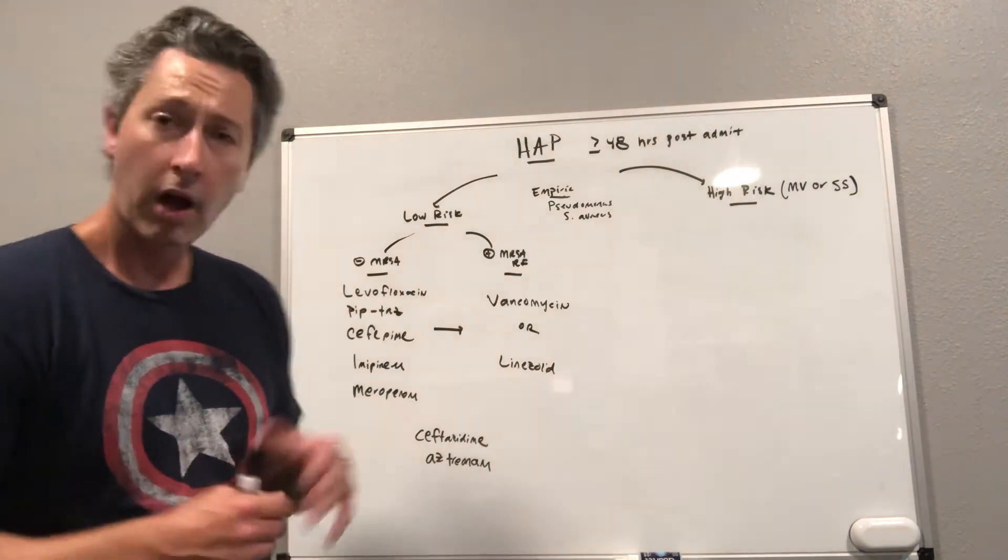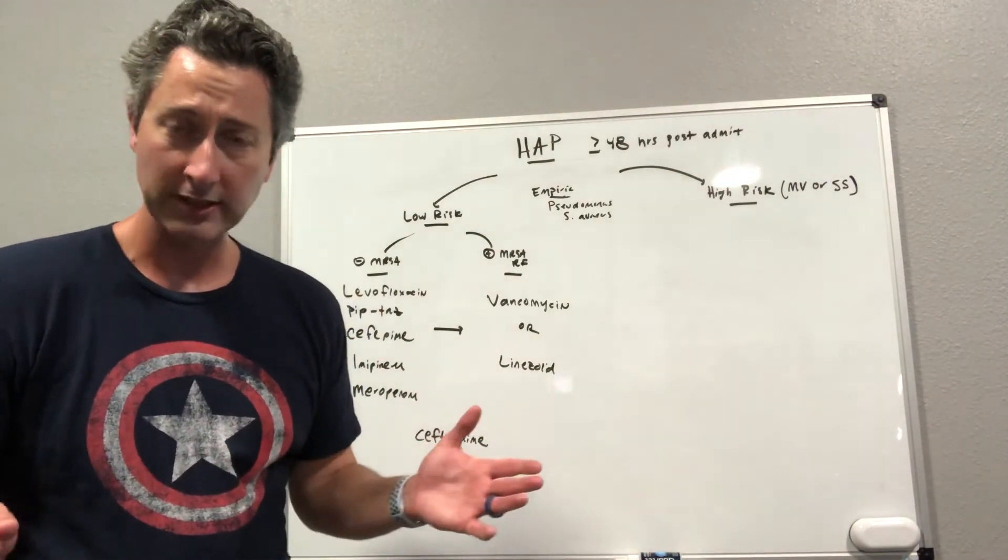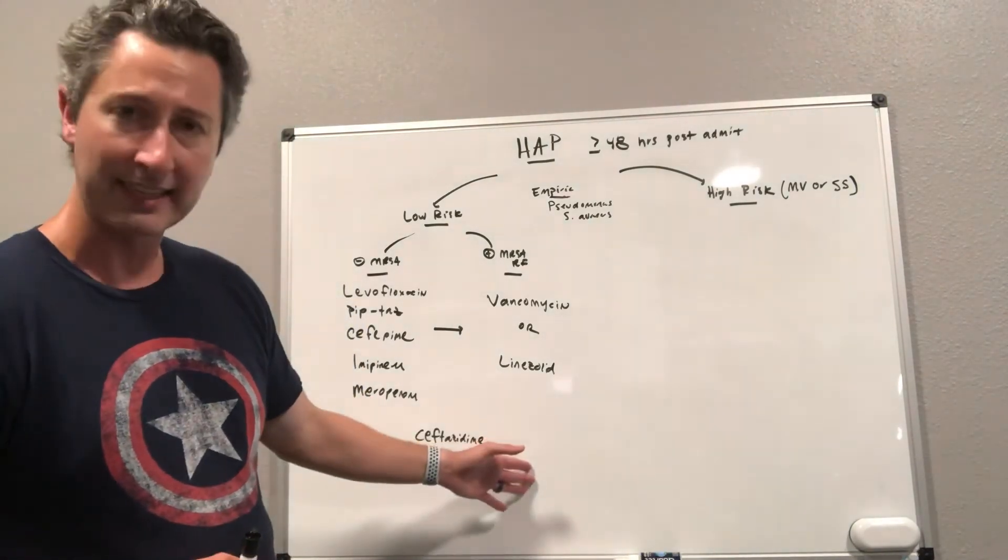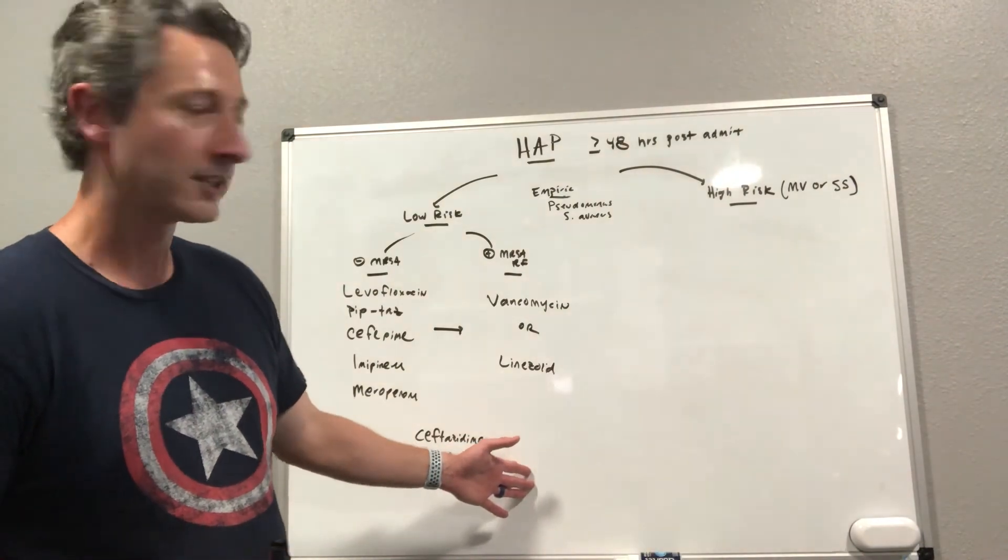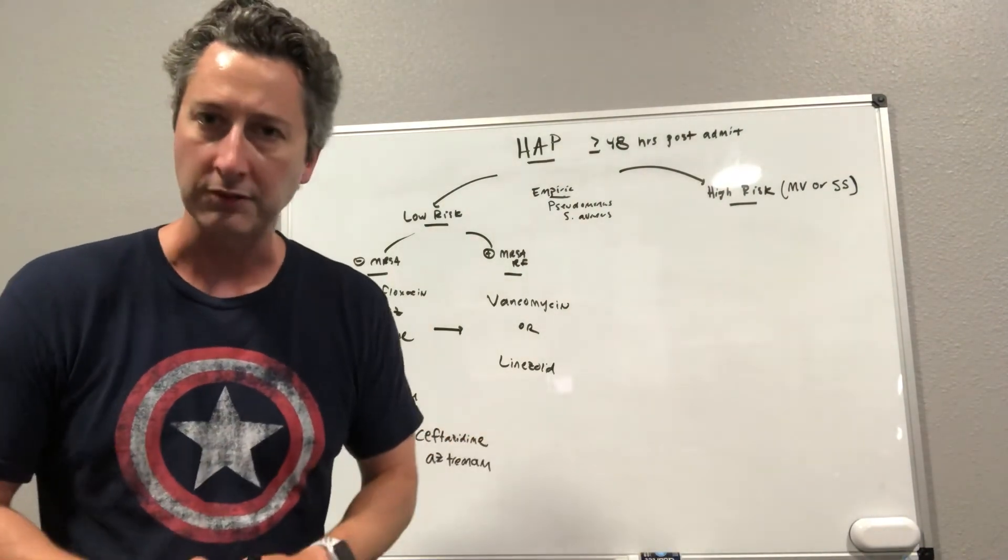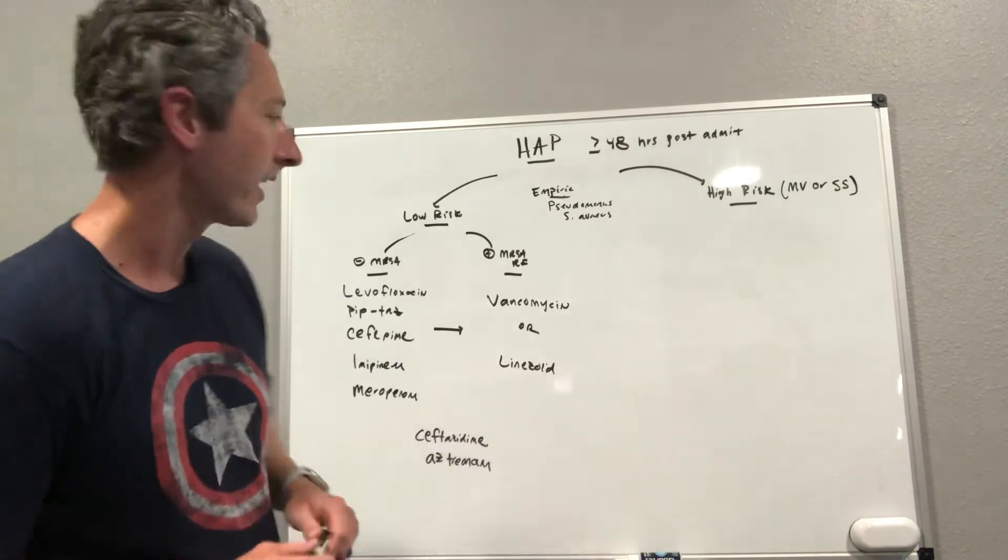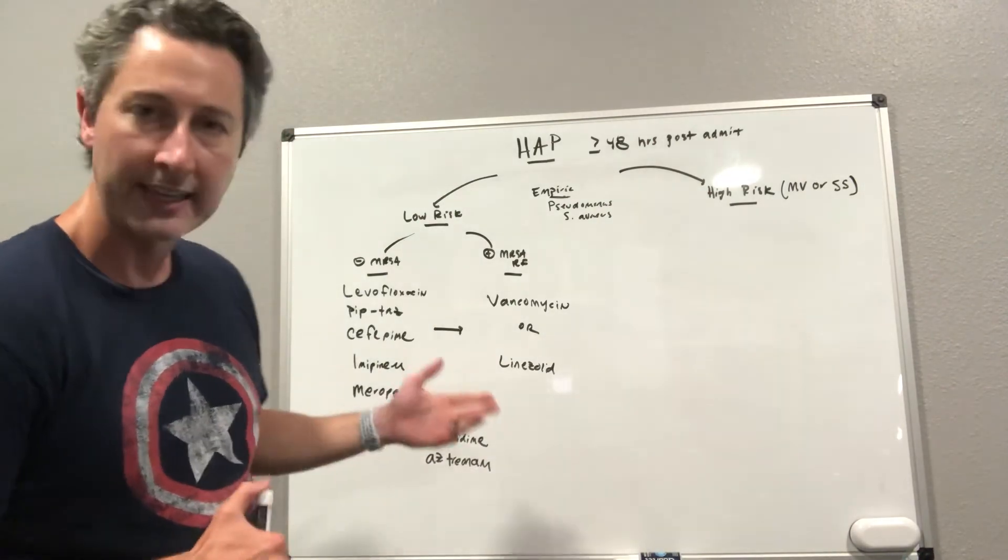Treatment is seven days, unless somebody's MRSA bacteremic or has Pseudomonas bacteremia or something like that. Seven days of treatment is really what's recommended for patients with hospital acquired pneumonia.